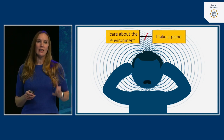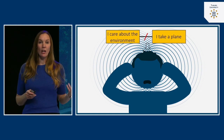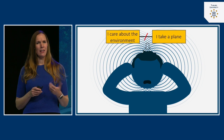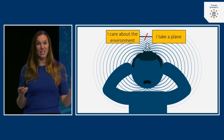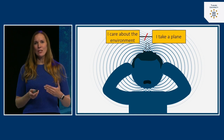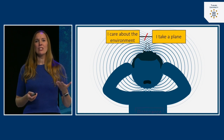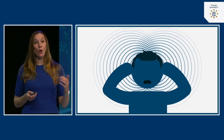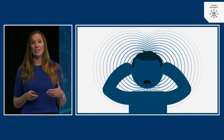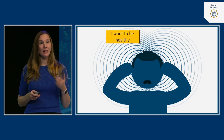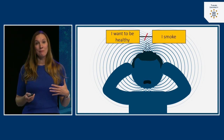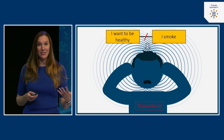For example, let's imagine you care about the environment and then you take an airplane to your Ibiza holiday with friends. If someone confronts you — 'I thought you cared about the climate and now you're taking a plane to Ibiza to party?' — then you start experiencing dissonance. Similarly, anyone who smokes experiences dissonance every time they light a cigarette, because we all want to be healthy and yet you still smoke.